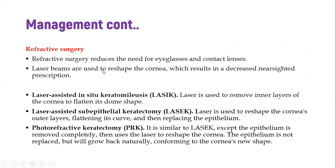If glasses or contact lenses don't work, refractive surgeries can be used, where laser beams are used to reshape the cornea, reducing nearsightedness. A common one is LASIK — laser-assisted in situ keratomileusis — where a laser removes the inner layer of the cornea to flatten it slightly, reducing its refractive power. Another is LASEK — laser-assisted sub-epithelial keratectomy — which reshapes the cornea similarly using laser, focusing on the outer layer, then replacing the epithelium after flattening the curvature.